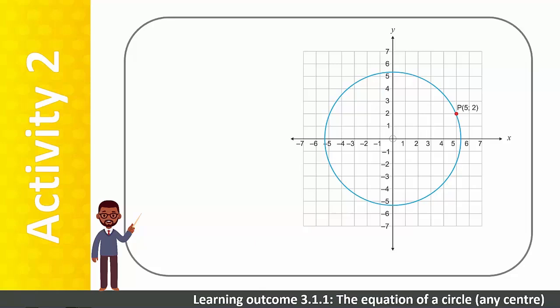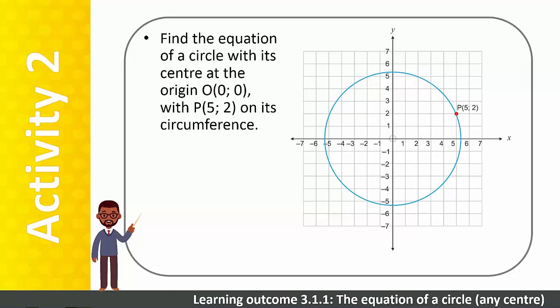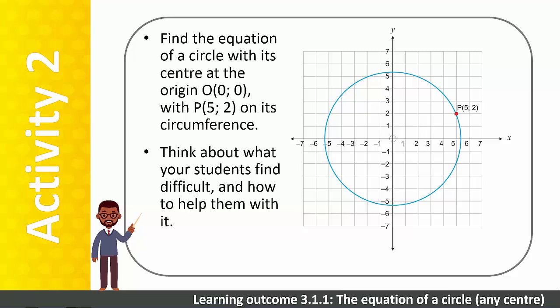Now try this example on your own. Find the equation of a circle with its centre at the origin O(0, 0), with P(5, 2) on the circumference. As you work through this, think about what your students find difficult and how to help them with it.